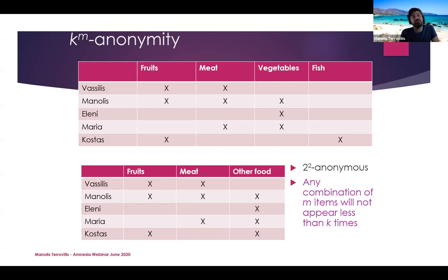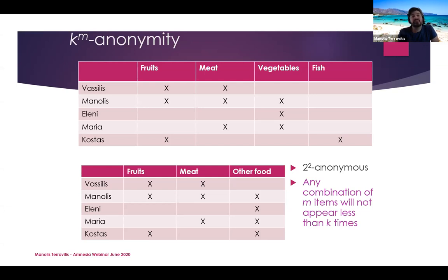If we consider adversaries with only partial knowledge — they know up to M products bought in a single transaction — we can offer what we call KM-anonymity, which guarantees that every combination of M different products will appear at least K times. This allows a more informative table where every combination of two quasi-identifiers appears at least twice across different candidates. This method does not consider negative knowledge — it doesn't consider that someone did not buy something — because knowing someone didn't buy something from 20,000 products is not very informative.